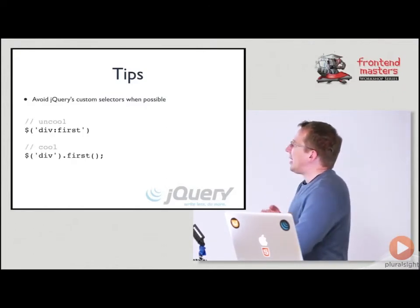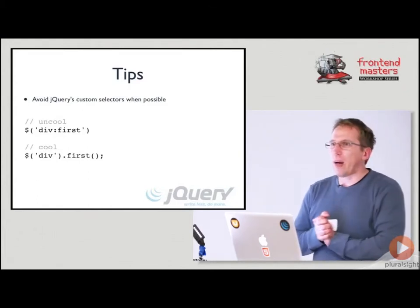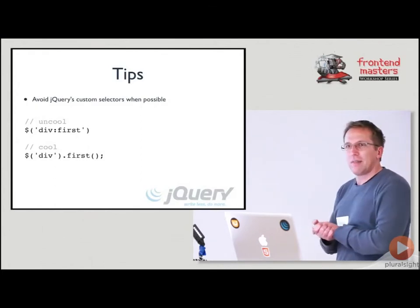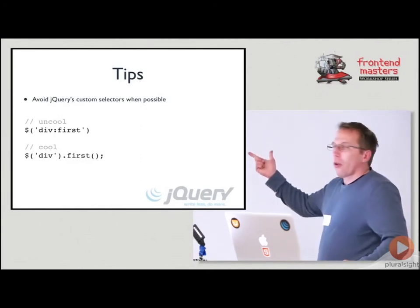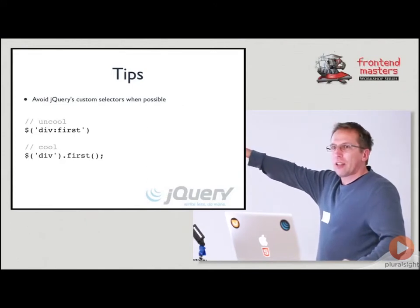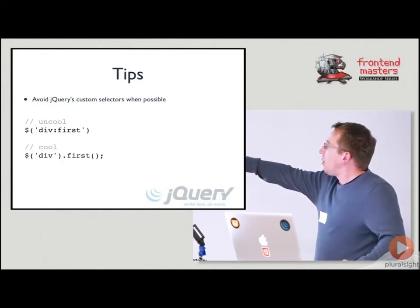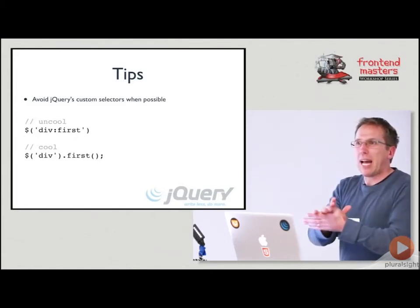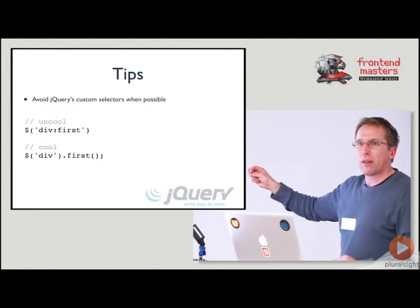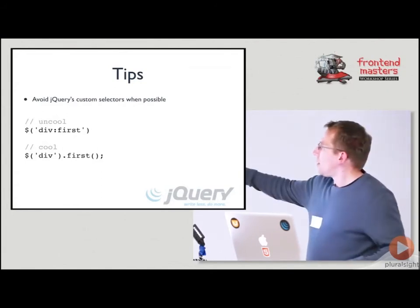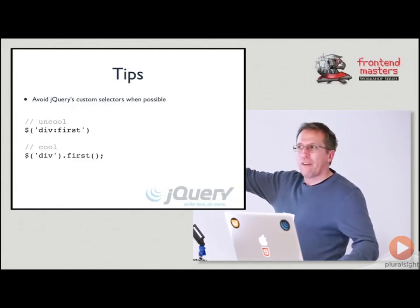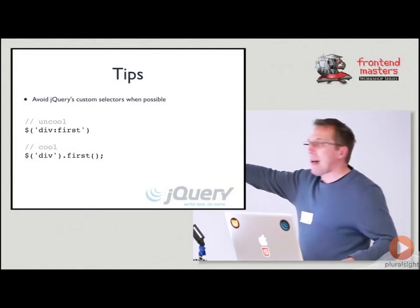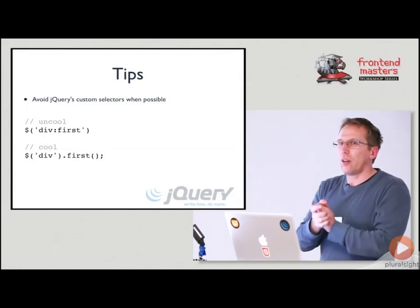Another example: `div:first`. Those funky selectors were fun at first but they're slower — jQuery has to parse them out and do all sorts of extra work. With `$('div').first()`, it just does `getElementsByTagName`, grabs the collection, then plucks out the first one. The real work is done inside that jQuery function call, and then the method is just acting on the collection it already has, so it's much easier.